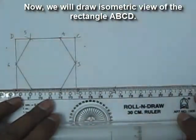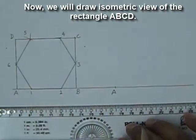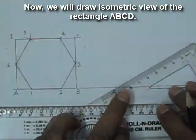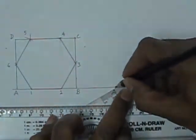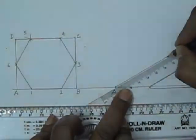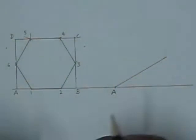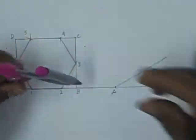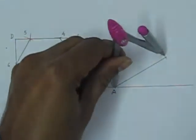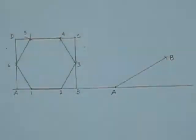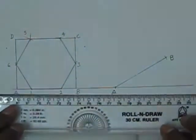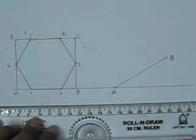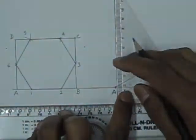Now let's draw the isometric view of this rectangle ABCD. First we draw this side of the rectangle. AB side has been drawn in isometric view 30 degree to the reference line.